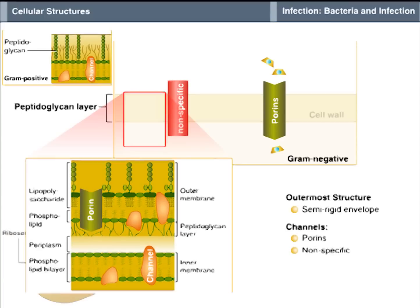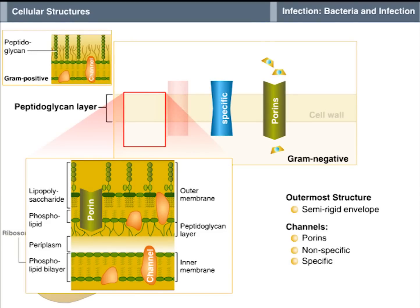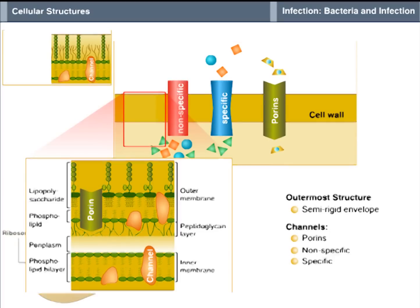Some of these channels are non-specific. They allow any molecule up to a certain size to flow through them. Other channels are specific. Only certain particular molecules can pass through them. By prohibiting the entry of other molecules, including antibiotic drugs, into the cell, the cell wall channels protect the cell contents and enhance the likelihood of the cell's survival.